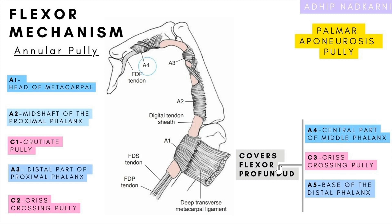A3, A4, and A5 cover the flexor profundus — that gray colored tendon you can see. Another feature you might notice is that the volar part of the pulley is slightly shorter compared to the dorsal part and is slightly concave. This shape — the roof being shorter than the base and concave — helps it conform so that when you flex the finger, it forms a nice tunnel through which the tendon can pass without pinching.